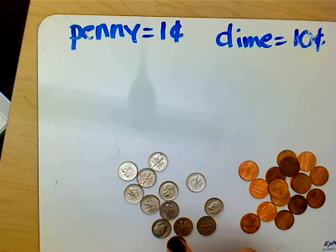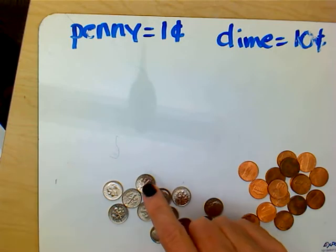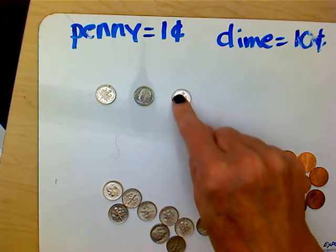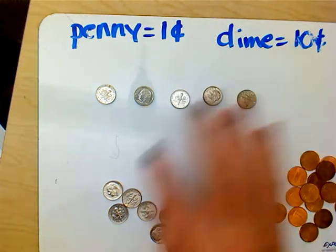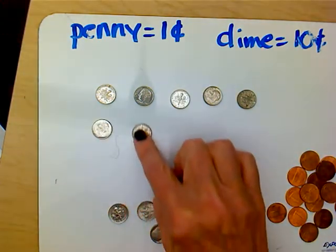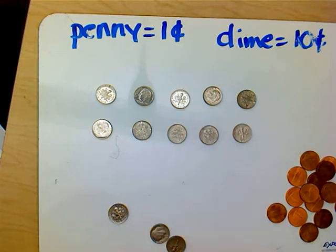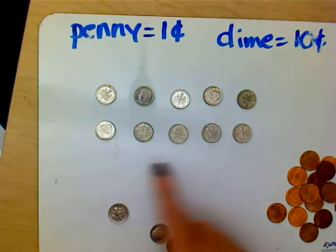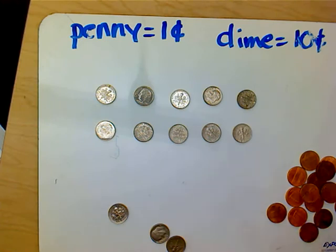We are going to begin by counting out, starting by 10s — and you're going to help me: 10, 20, 30, 40, 50, 60, 70, 80, 90, 100. So there is 100. Or we could exchange those 10 groups of 10 pennies for a dollar.